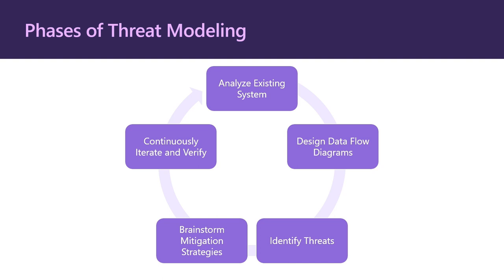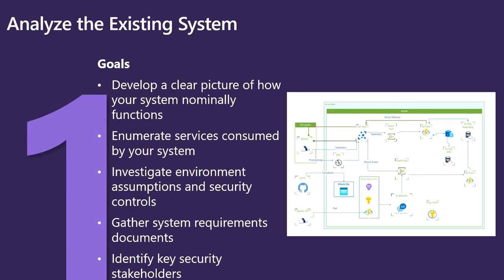Let's go over these phases one step at a time, and then we'll apply them to threat model the Death Star. The first phase is to analyze the existing system — known as the design phase. This is the starting ground for your threat modeling activities. You'll gather as much data as possible about what you're building. High-level goals include developing a clear picture of how your system nominally functions, enumerating services consumed, investigating environmental assumptions and security controls, gathering system design requirements and architectures, and identifying key stakeholders.